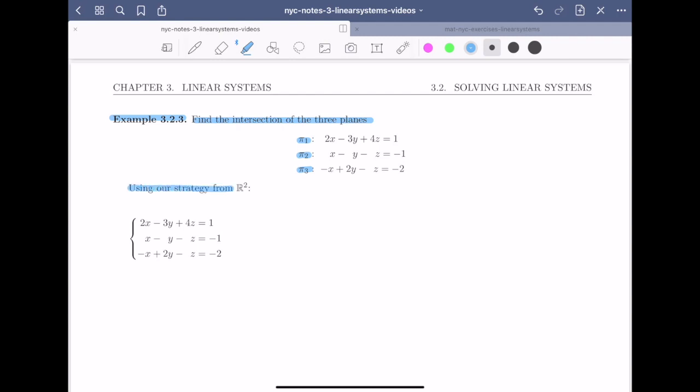We're going to use the same strategy that we used from R2 when we were finding the intersection between two lines. The first thing we do is think about finding the intersection of the three planes as solving a linear system. Once we have a linear system we know that we have to begin by putting the linear system in its augmented matrix.